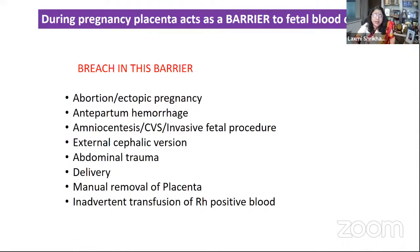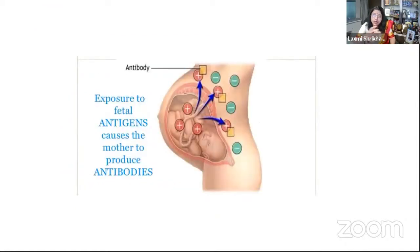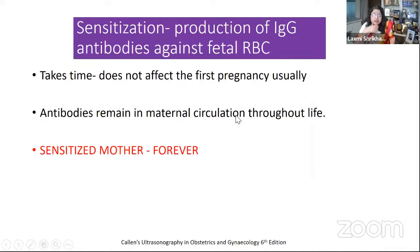Sometimes a breach occurs in the placental barrier — in cases of abortion, ectopic pregnancy, antepartum hemorrhage, when doing invasive fetal procedures like chorionic villus sampling, amniocentesis, external cephalic version, when there is abdominal trauma, during manual removal of placenta, or with inadvertent transfusion of RH positive blood. Once this barrier is breached, there is exposure of fetal antigens to the maternal circulation and the mother starts developing antibodies. This sensitization process — the production of IgG antibodies against fetal RBC — takes time.